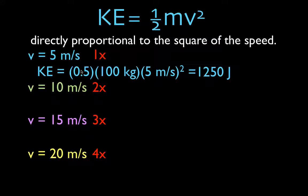So for our base, an object that has a mass of 100 kilograms, it has a velocity of five meters per second, then it's going to have a kinetic energy of 1250 joules.